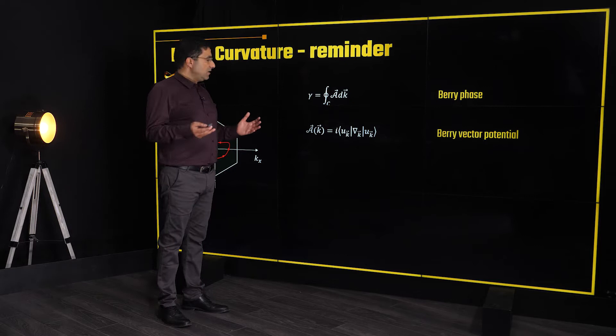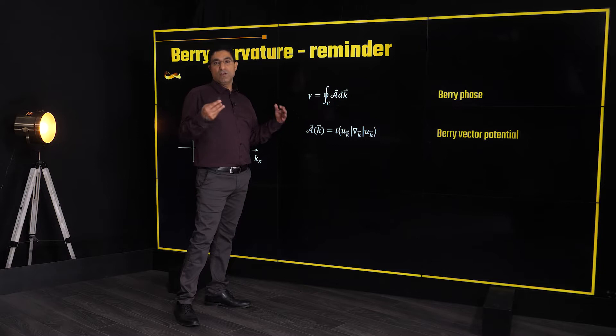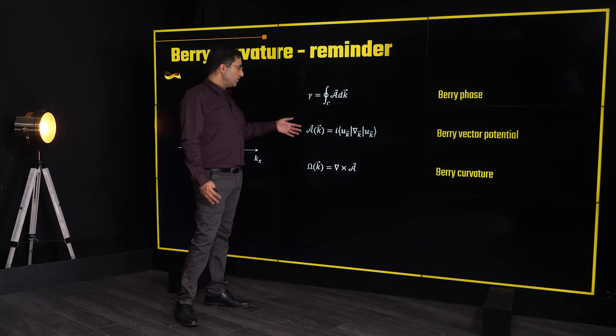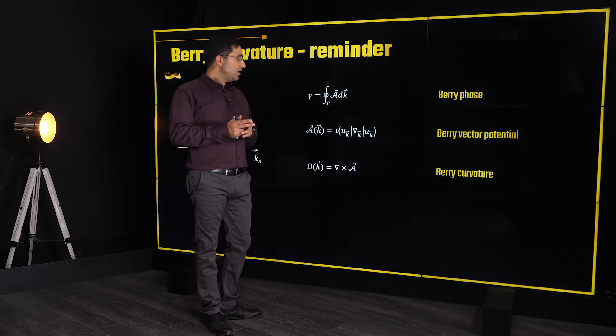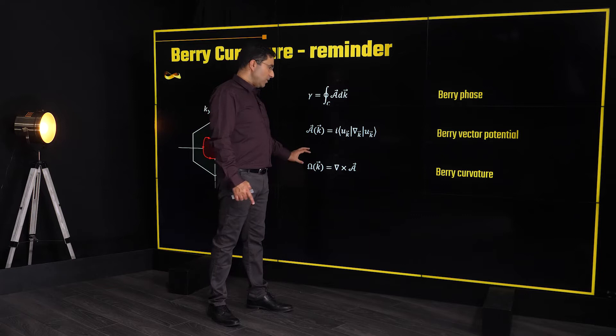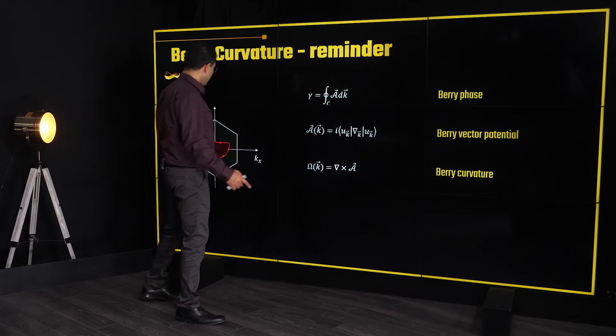Just like in usual electromagnetism, where we have a vector potential and can also get a field from the curl of the vector potential, we get the same thing in k-space. The Berry vector potential is defined as before, and its curl we call the Berry curvature.